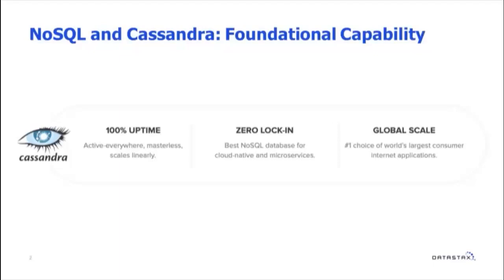From the zero lock-in standpoint, Cassandra is deployment agnostic — it just doesn't care where you put it. That could be on-prem, in a cloud provider, AWS, GCP, Azure, whatever. You're not locked into any particular vendor with Cassandra. From the global scale standpoint, Cassandra allows you, if you want a single database, to span the globe where you can have data centers in multiple geographic locations to put your data close to where your users are — as a single database that can scale with you.